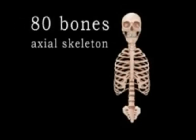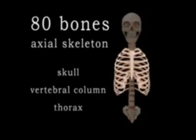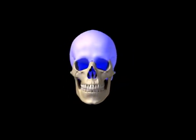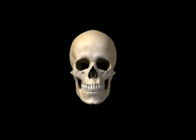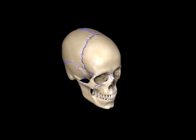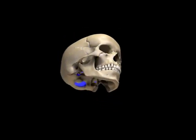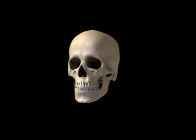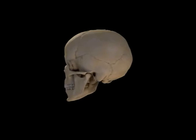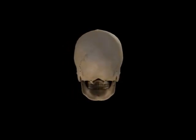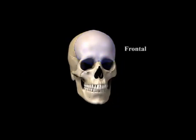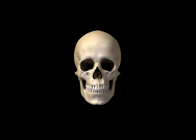The axial skeleton consists of the skull, vertebral column and the thorax. The human skull is made up of eight cranial bones that surround and protect the brain and 14 facial bones that form the underlying structure of the face and support for the teeth. With the exception of the mandible, bones of the skull articulate with each other via immovable joints called sutures. Throughout the skull, holes known as foramina serve as passages for blood vessels and nerves. Bones on the surface of the skull encase the brain, protect sensory organs and serve as attachment sites for muscles of the head and neck. These bones include the occipital bone, parietal bones, temporal bones and the frontal bone. The parietal and temporal bones occur in pairs, one on either side of the head.